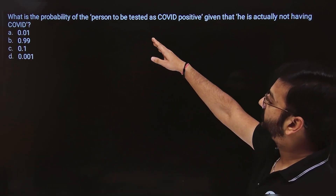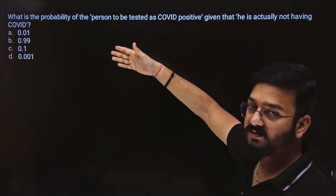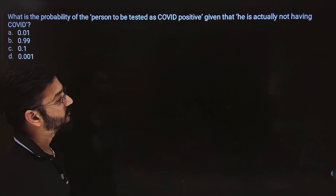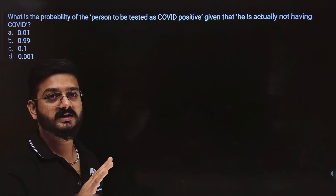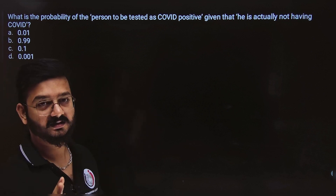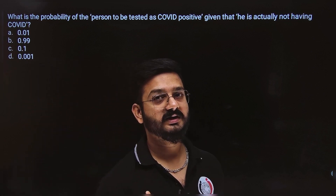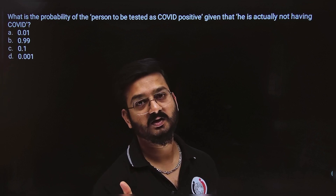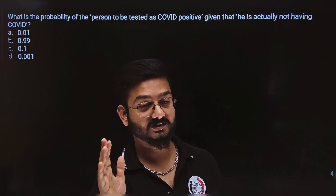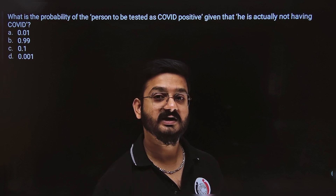Let's move to the next part. What is the probability of the person to be tested COVID positive, given that he's actually not having COVID? The person doesn't have COVID, still he's showing COVID positive. What does that mean? That the result of the test is wrong.